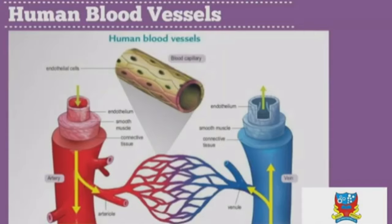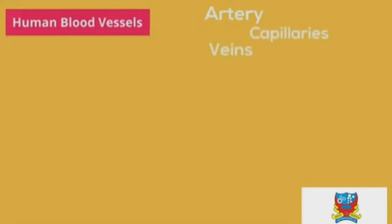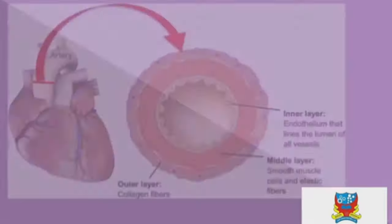Human blood vessels are divided into three types: arteries, capillaries, and veins. Arteries are blood vessels that transport blood out of the heart, quickly transporting blood at high pressure to the tissues.